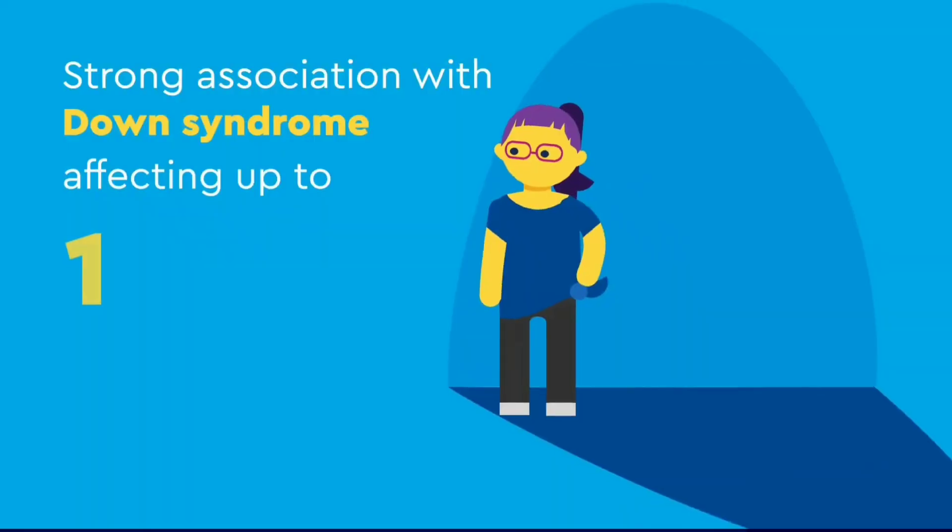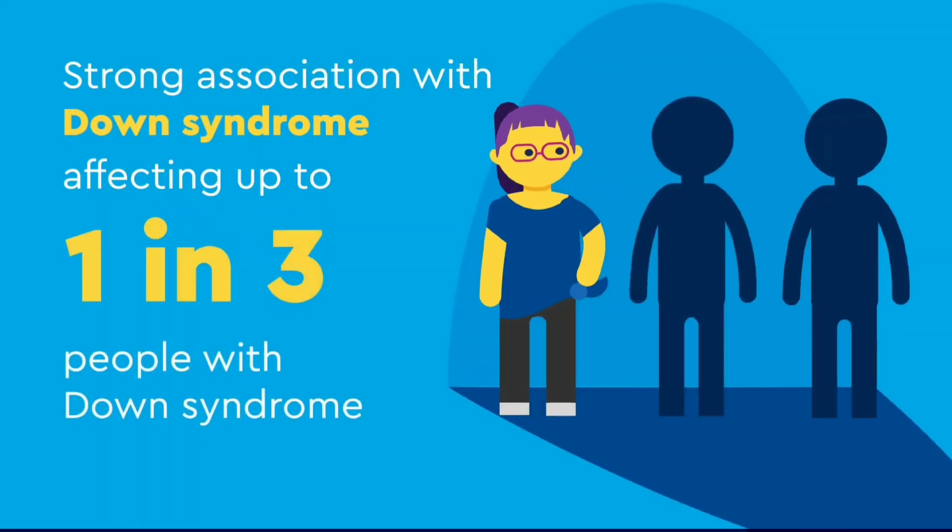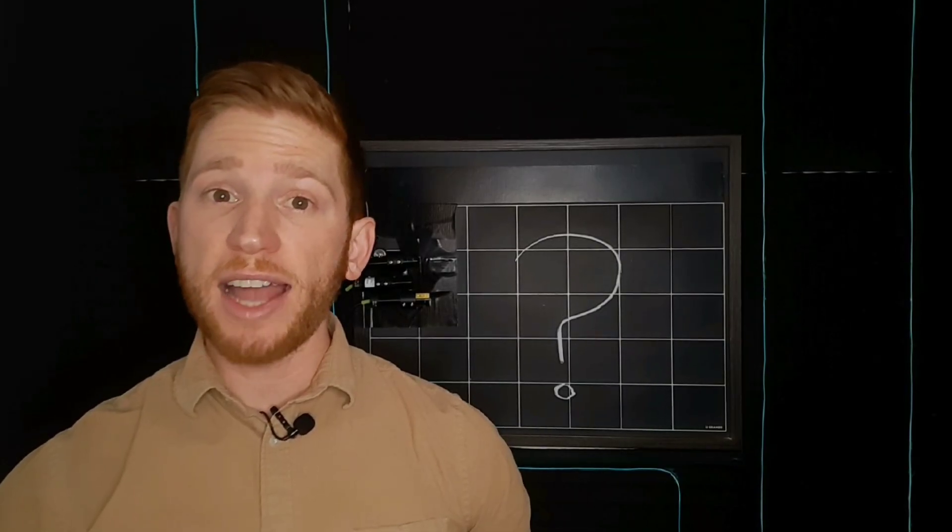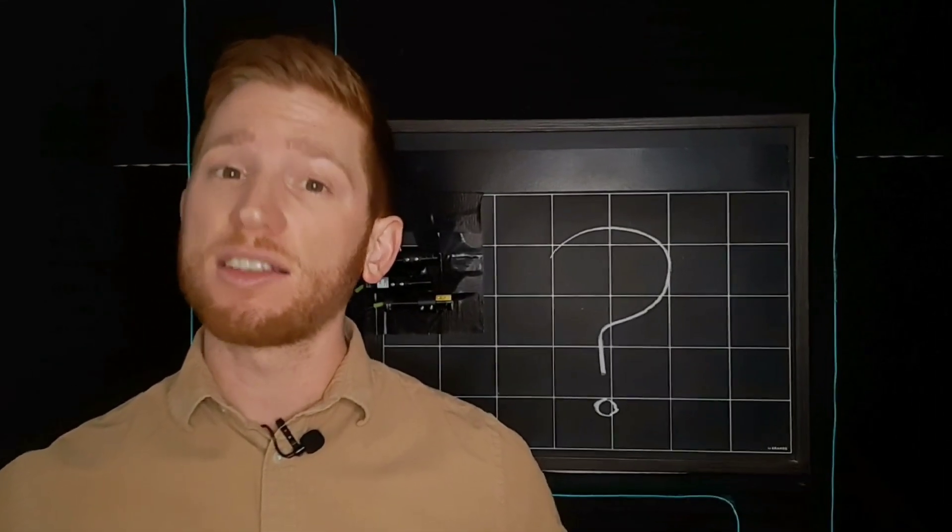like asthma, down syndrome, and some rare eye conditions like retinitis pigmentosa. While all of these factors increase your Keratoconus risk, nobody knows the exact causes of it.